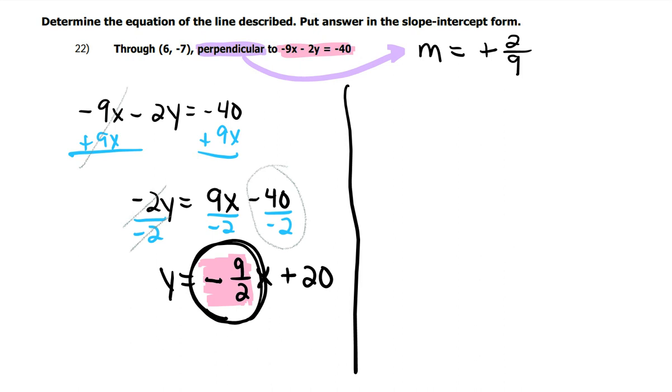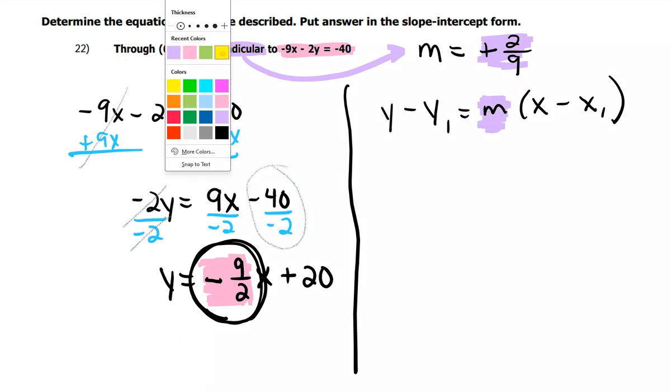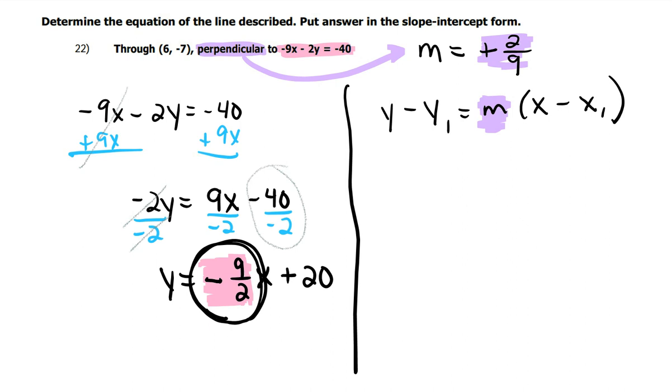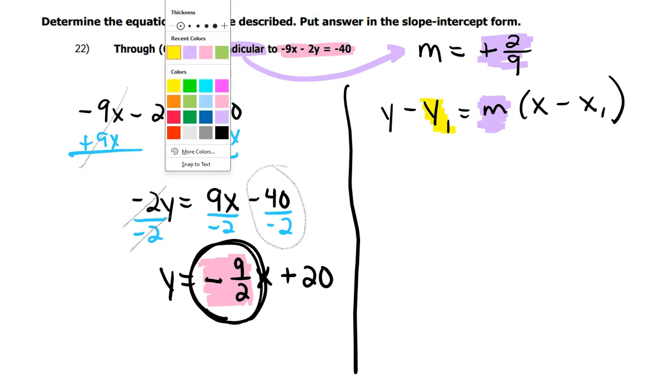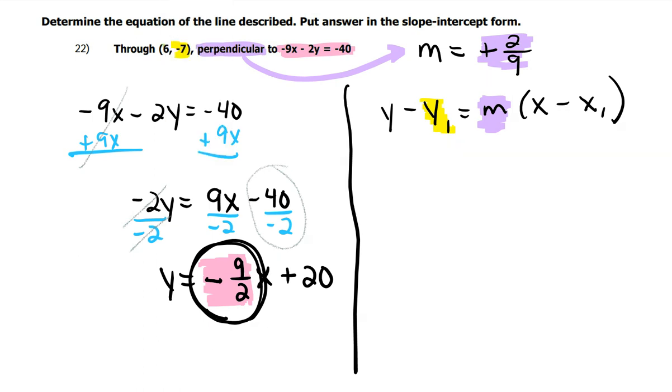And now at this point, I have my slope. I have a random point. I can go back to the point slope formula, which is this guy. And I know that my 2 9ths is going to go right here. And then my random point that they gave me. Let's see. Y sub 1 is this y coordinate. So that's going to go there.